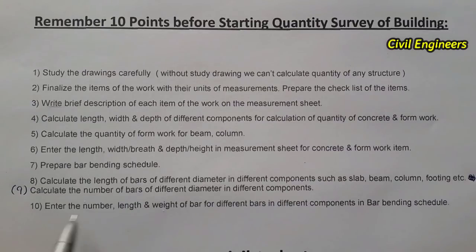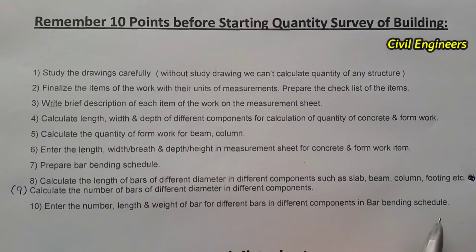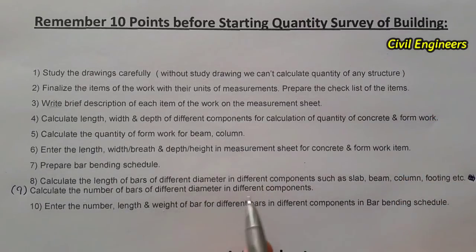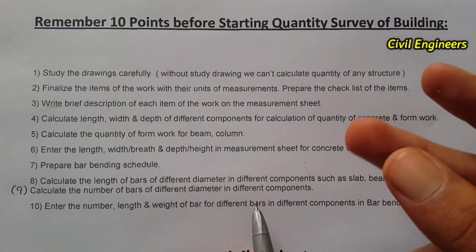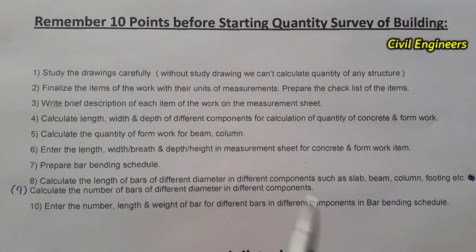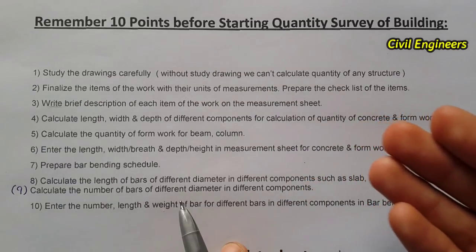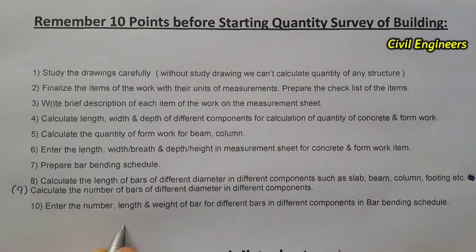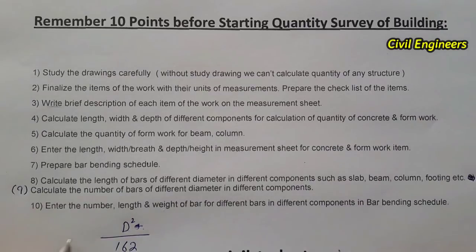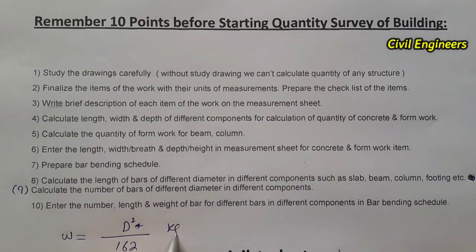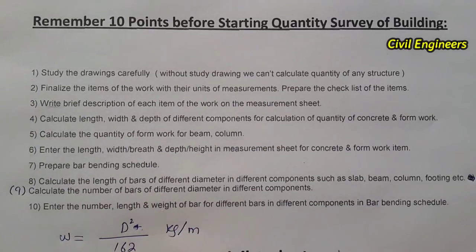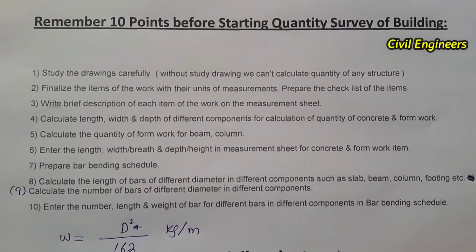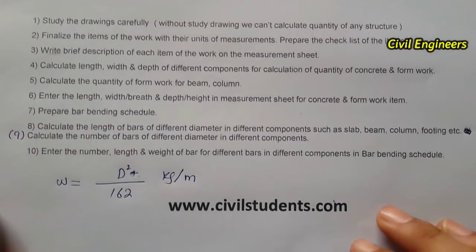The tenth and last point is to enter the number, length, and weight of bars for different bars and different components in the bar bending schedule. In building works we commonly use 8 mm, 10 mm, and 12 mm diameter bars. To find the weight of steel in kg per meter, we use the formula: D² / 162, where D is the diameter in millimeters.